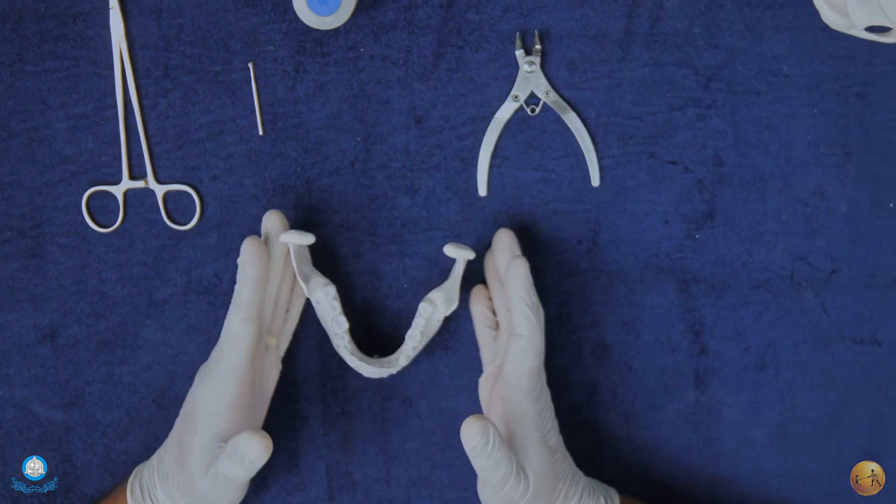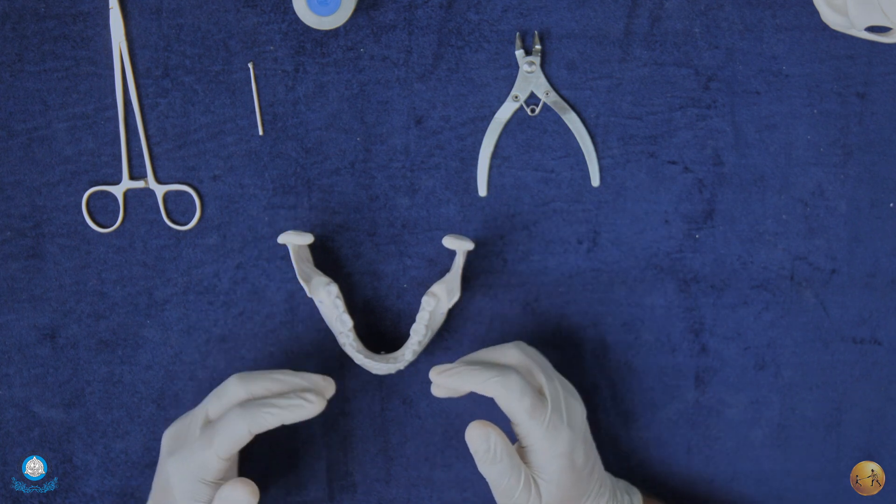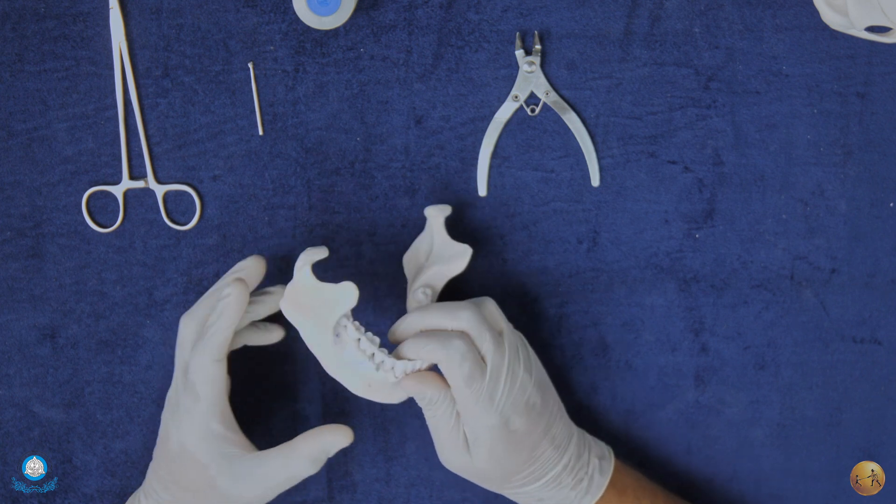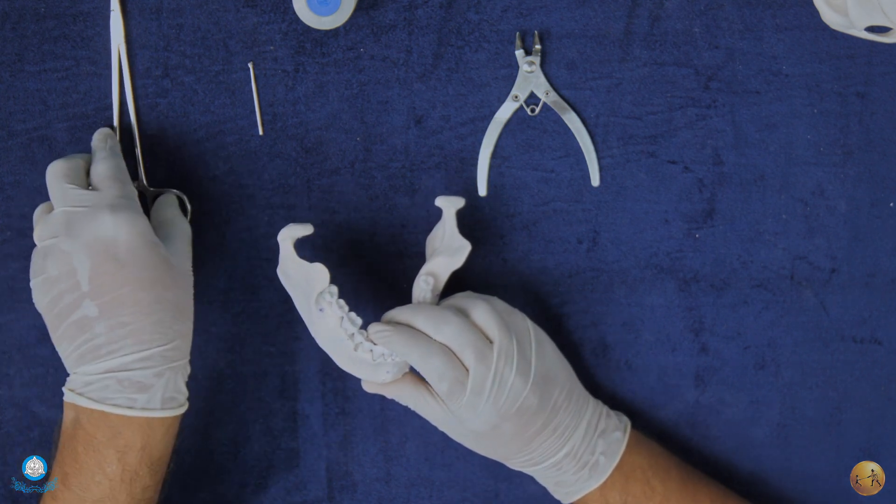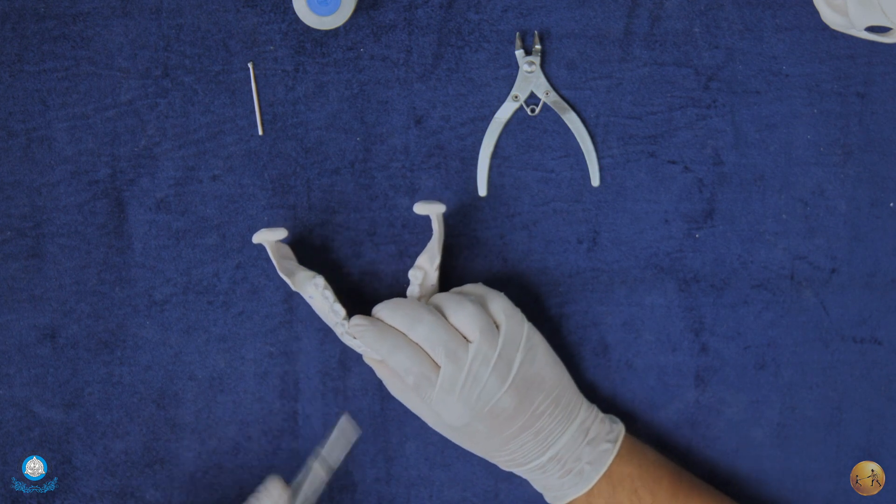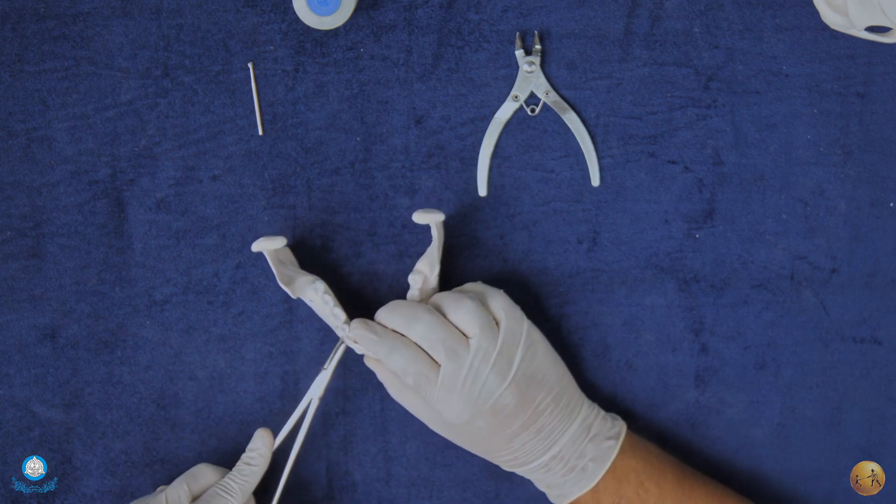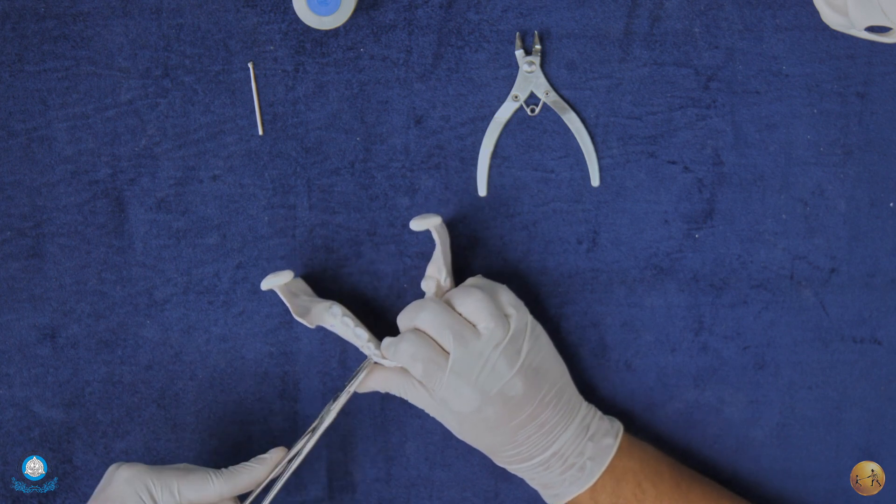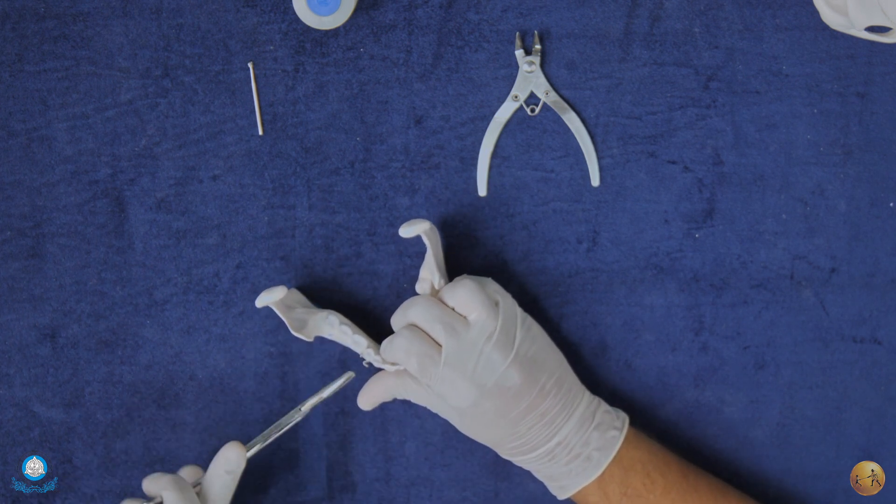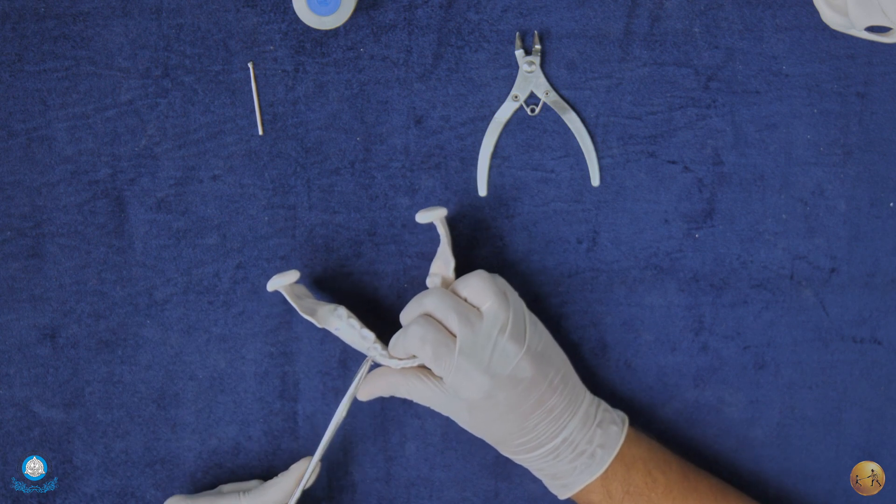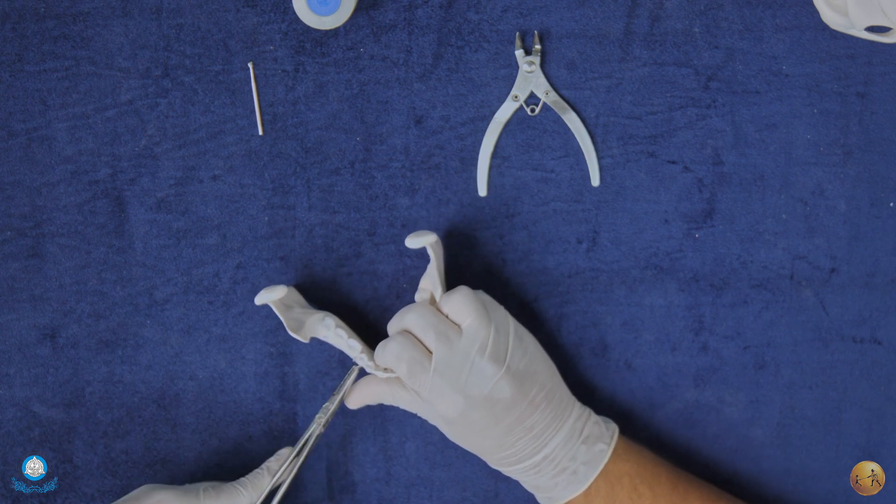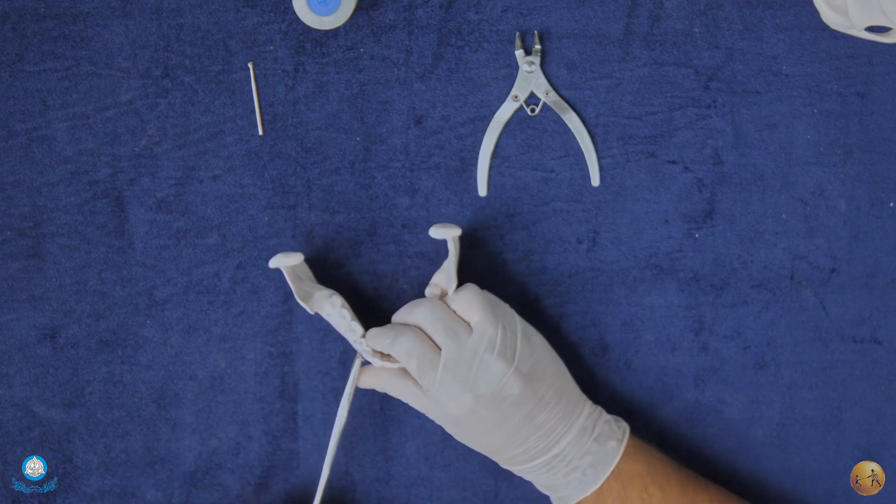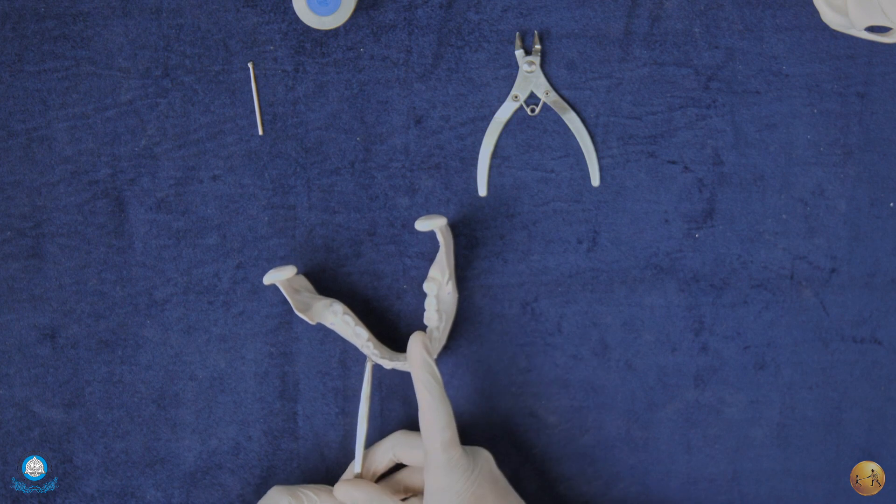Suppose your patient has come back or you are done with your reduction intraoperatively and you plan to remove your eyelets. What is the method to achieve that? We will be going in the exact opposite direction. We will first be opening up the loop. The loop will first be opened. Now, once the loop has been opened,